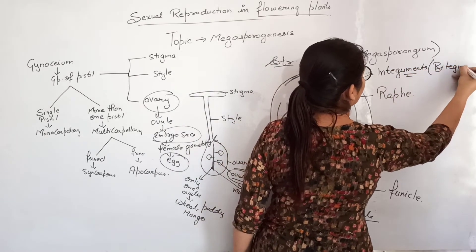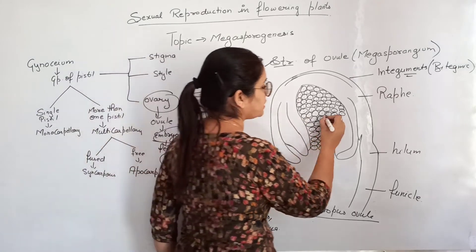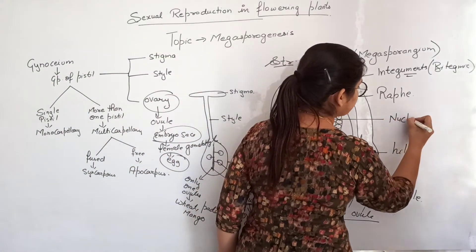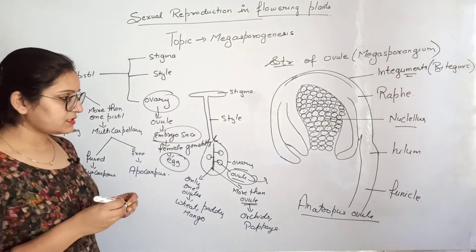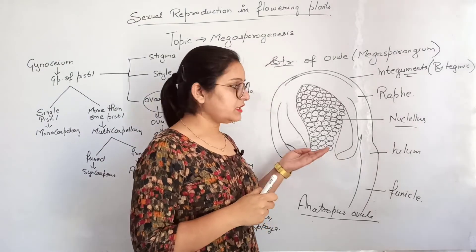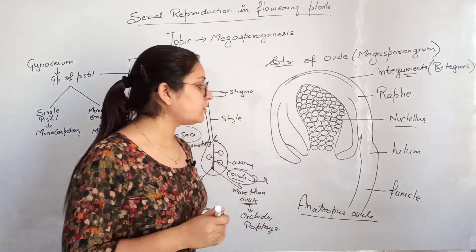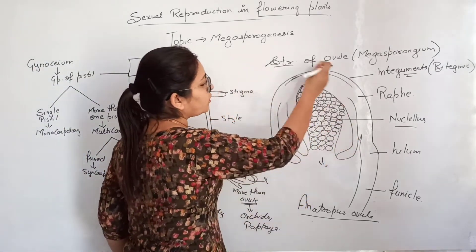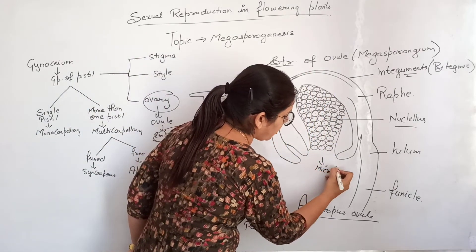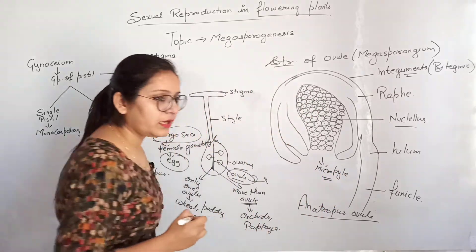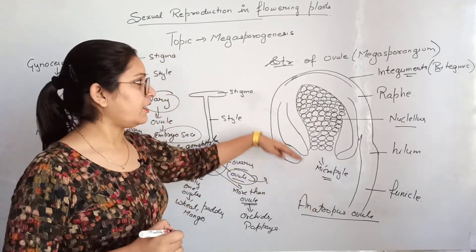The ovule has a covering known as integument. In angiosperms, most ovules are bitegmic, meaning they have two layers of integument. The main cells in the body portion of the ovule are known as nucellus cells. The integument is present all over the body of the ovule except at one point, which is called micropyle. Opposite to the micropyle is the chalaza.